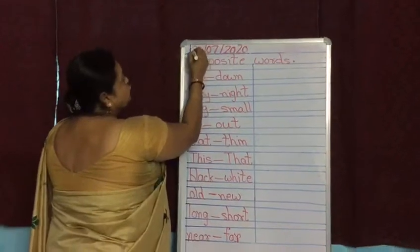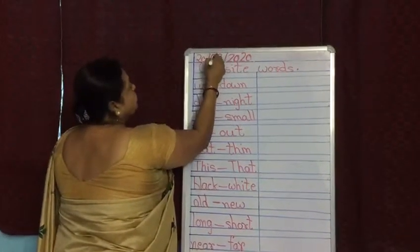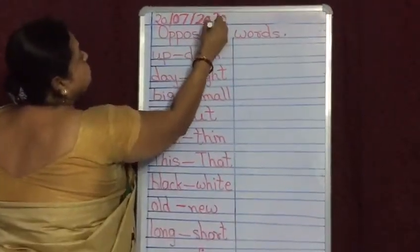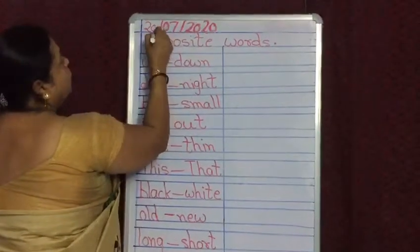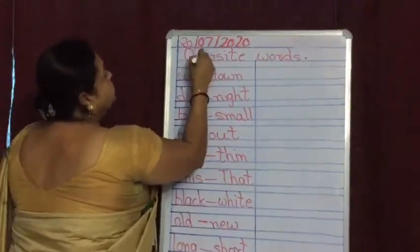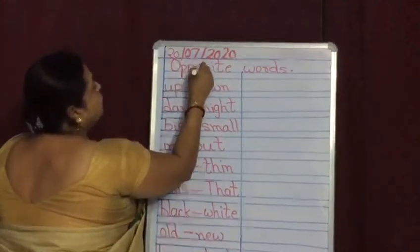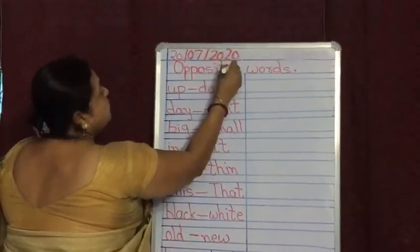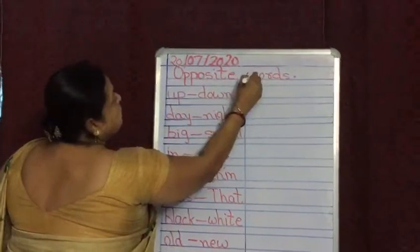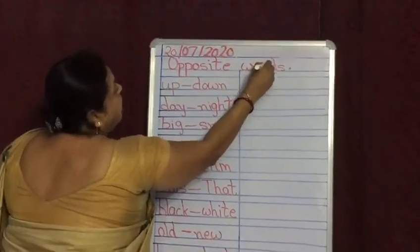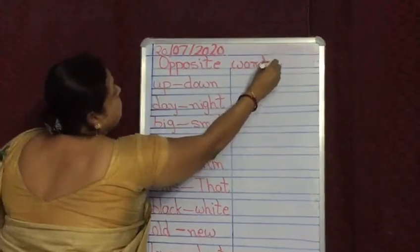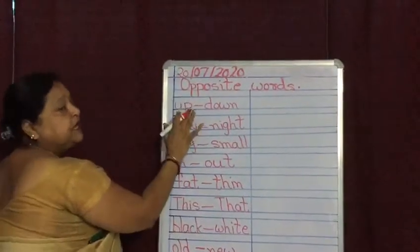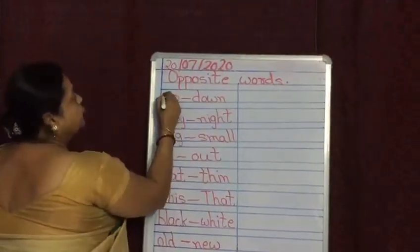The date is 20/07/2020. O-P-P-O-S-I-T-E, opposite. W-O-R-D-S, opposite words. In Hindi, inhe biloam shabd ya vibdish shabd bhi kehte hain. U-P, up.